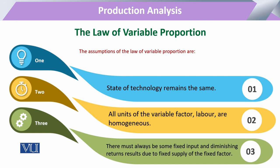The next assumption is that when we use a variable proportion of input — which we have seen in diminishing returns — it requires that some other factors remain fixed for that production function. Because it is not possible that a production function based on just one input is complete. So the supply of physical fixed factors should remain constant within the system.